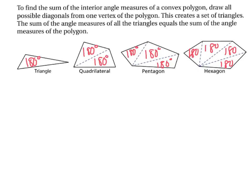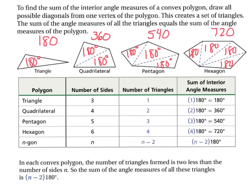The sum of the angle measures of all the triangles equals the sum of the angle measures of the polygon. So a triangle gives 180°, a quadrilateral gives 360°, a pentagon gives 540°, and a hexagon gives 720°. There's a formula that gives you all of this — let's look at our table.